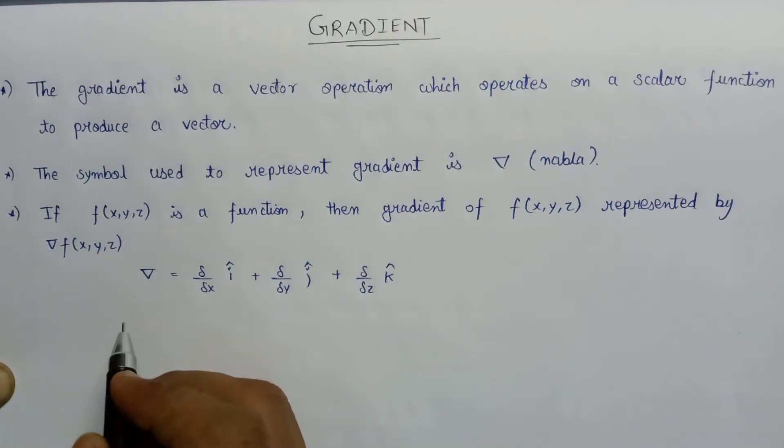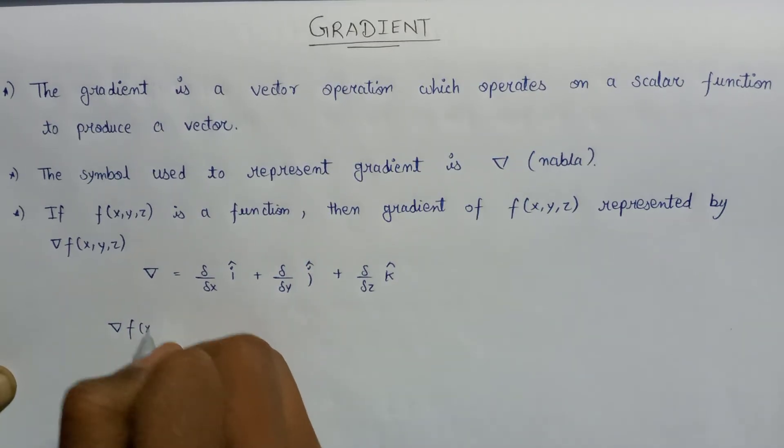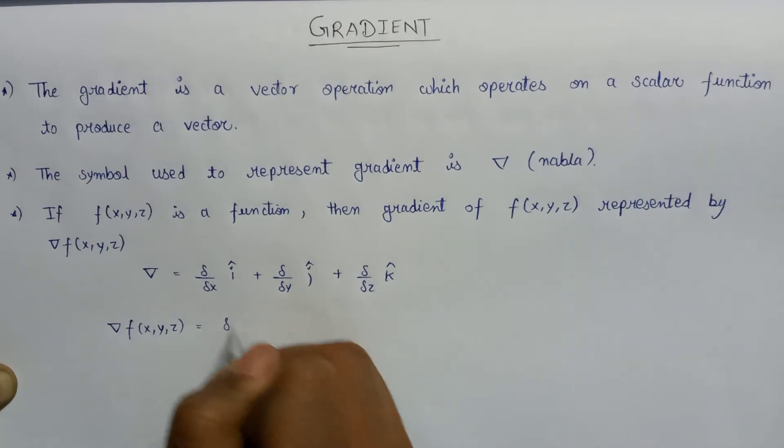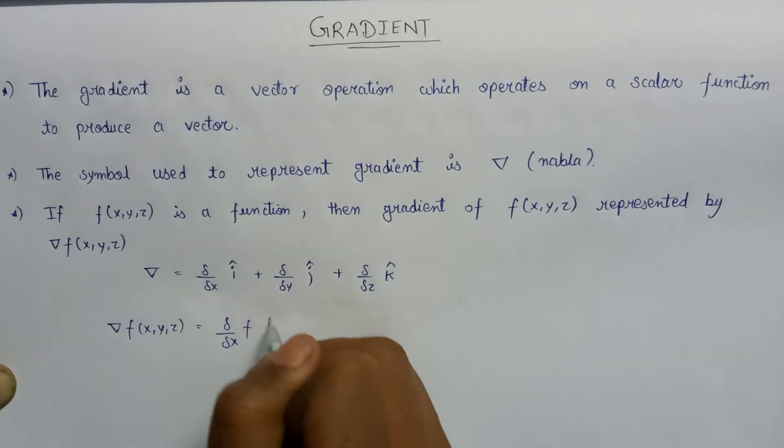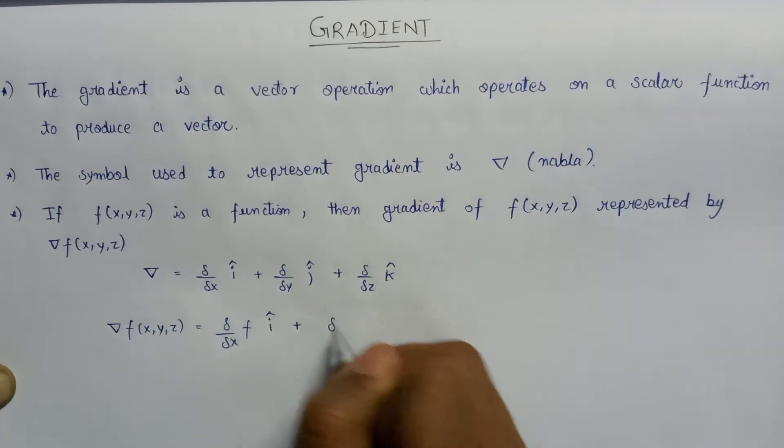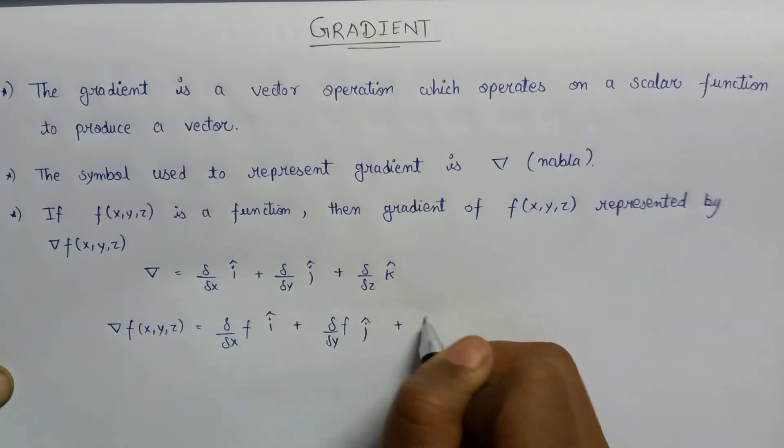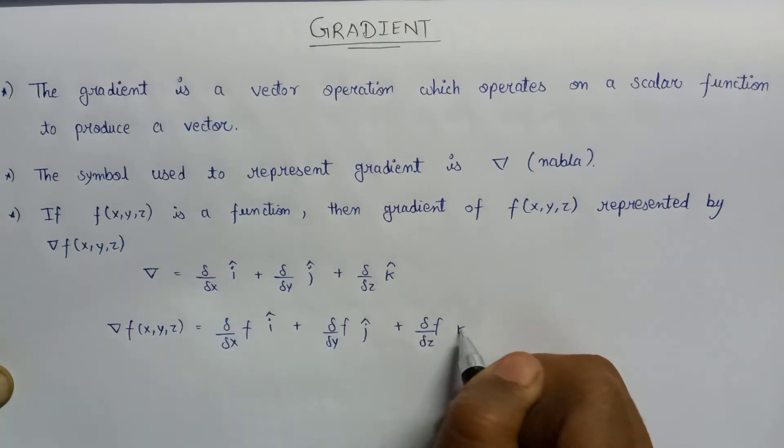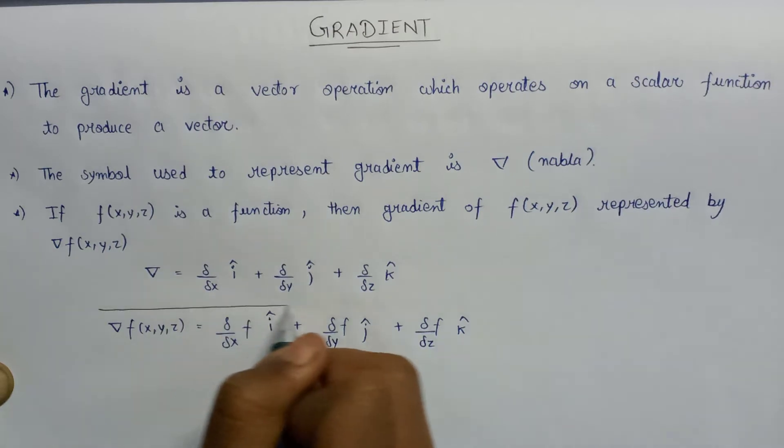Since this is the value of nabla, if we calculate del of f(x,y,z), then the value will become del over del x f into i cap plus del f over del y into j cap plus del f over del z into k cap. This is the value of gradient of a function x, y, and z.